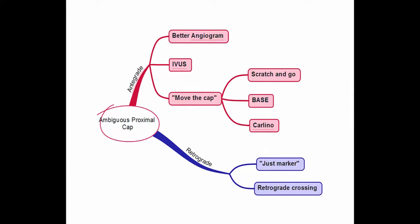In summary, intravascular ultrasound can be a useful tool for clarifying proximal cap ambiguity by demonstrating the origin of the occluded vessel and highlighting where the wire is coursing in relationship to it. There are other ways to clarify proximal cap ambiguity, including better angiography in various projections and various sub-intimal techniques called 'move the cap,' such as the scratch-and-go, balloon-assisted sub-intimal entry, and the Carlino technique. Finally, the retrograde approach — advancing a retrograde guide wire — can either clarify the ambiguity or be used for retrograde crossing.